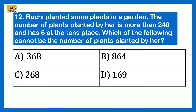Ruchi planted some plants in a garden. The number of plants planted is more than 240 and has 6 at the tens place. Which of the following cannot be the number of plants? Option A 368, Option B 864, Option C 268, Option D 169. All options have 6 in the tens place, but 169 is less than 240. Therefore the answer is Option D 169.